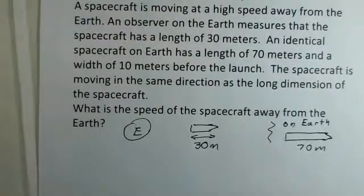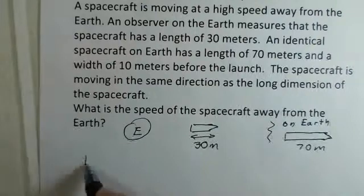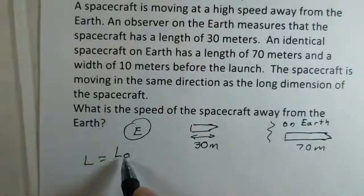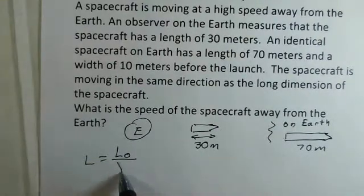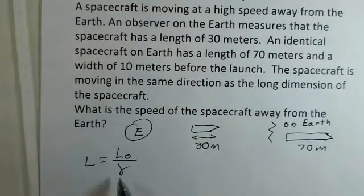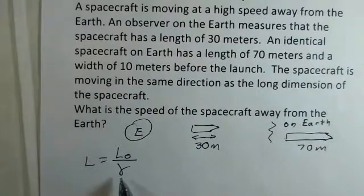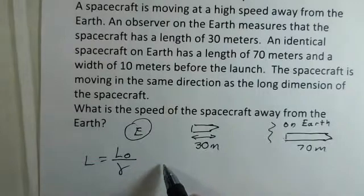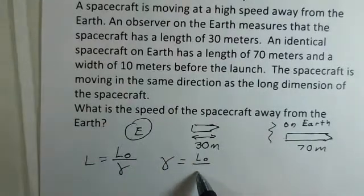The reason that it's shorter is length contraction has taken place. The length is the rest length divided by our gamma factor. We want to determine the speed, and that speed is a parameter inside the gamma calculation, so that's the way we'll be progressing.